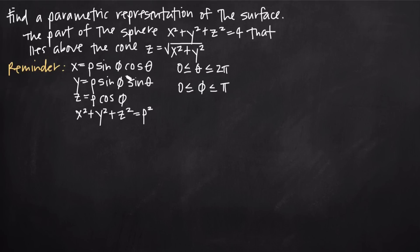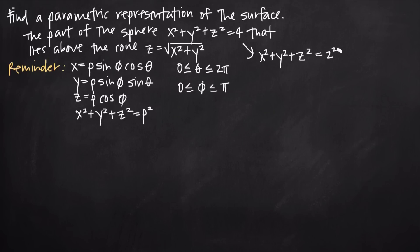We only want the parametric equations to be in terms of phi and theta. We want to solve for rho and plug that in to x, y, and z so that these parametric equations are only in terms of phi and theta. We have a conversion formula that tells us x squared plus y squared plus z squared is equal to rho squared. Conveniently, the equation of our sphere is already in this format where x squared plus y squared plus z squared equals 2 squared, so rho equals 2. We know it's not negative 2 because by definition of spherical coordinates, rho must be greater than or equal to 0.